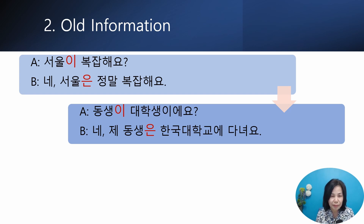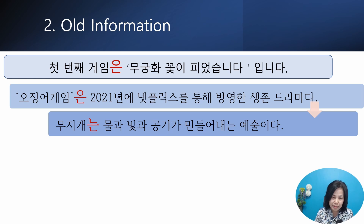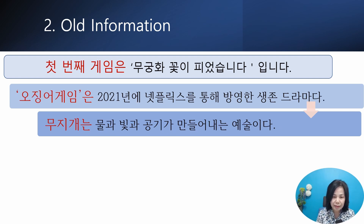Let's practice checking new versus known information. 서울이 복잡해요? 네, 서울은 정말 복잡해요. 동생이 대학생이에요? 네, 제 동생은 한국대학교에 다녀요. However, in some essays, articles, and dictionaries, even though it is new information, we can see it starts with 은/는. For example: 첫 번째 게임은 무궁화꽃이 피었습니다 입니다. 오징어 게임은 2021년에 넷플릭스를 통해 방영한 생존 드라마다. 무지개는 물과 빛과 공기가 만들어내는 예술이다. When the subject or title of a writing is introduced first, it often starts with 은/는 because the speaker will then talk about that topic.